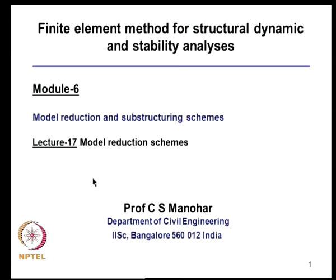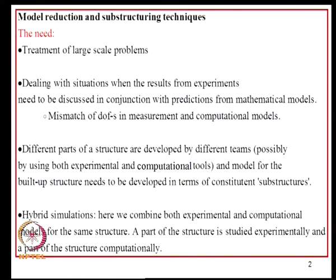Towards the end of the previous lecture we started talking about issues related to model reduction and substructuring schemes, so we will continue with this discussion. The need for using model reduction and substructuring arises in several contexts: one is for treating very large scale problems, or in dealing with situations when results from experiments need to be discussed in conjunction with predictions from mathematical models. For a given structure we may have both a finite element model and experimental investigations that we want to reconcile, which is an essential step in finite element model updating. Model reduction arises due to mismatch between degrees of freedom in measurement and computational models.